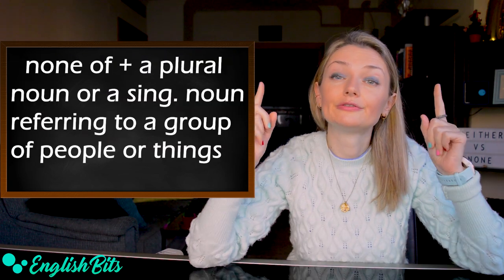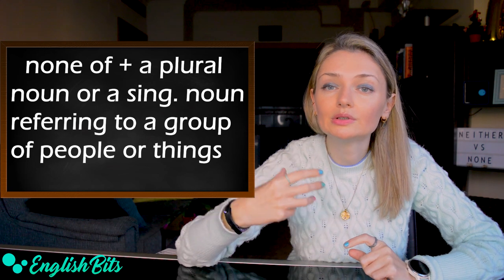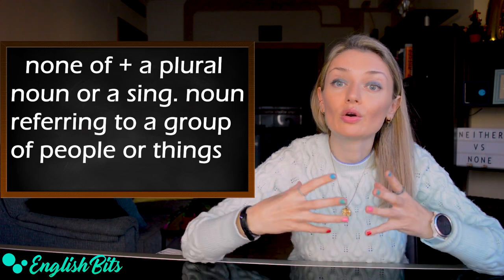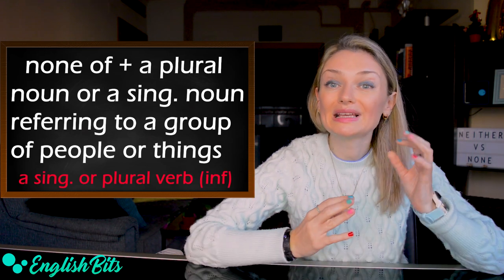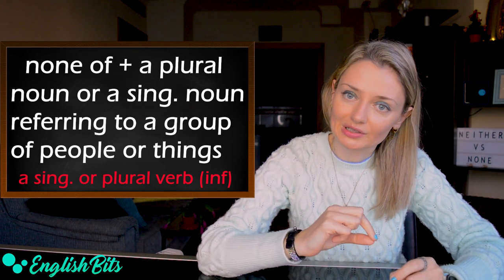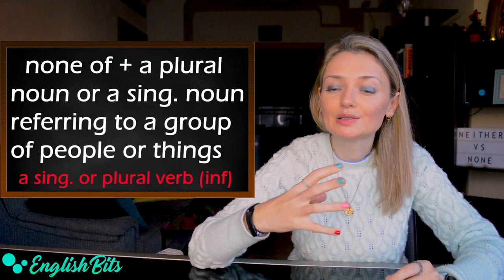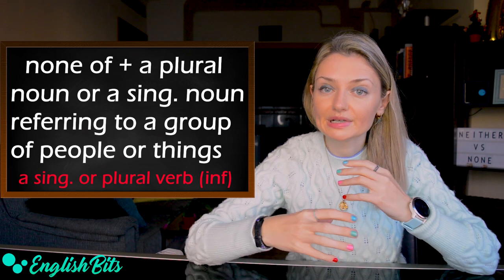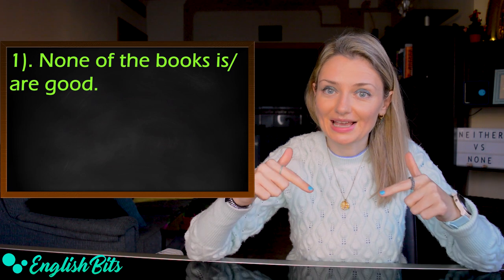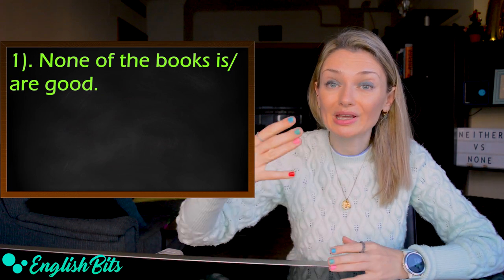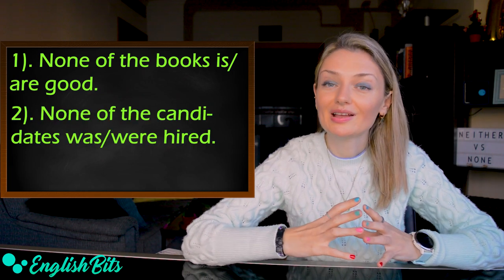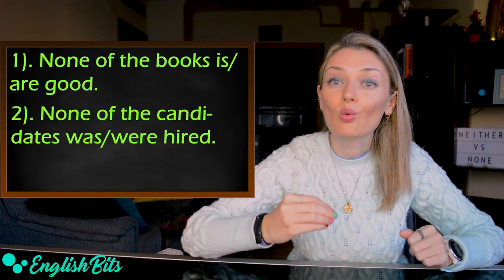And if none of is followed by a plural noun or a singular noun referring to a group of people or things, in this case, we can use either a singular verb or a plural verb after it. Once again, a plural verb is more used in spoken English. For example, none of the books is or are good. So in this case, remember, we talk about three or more books, not two. And one more example here: none of the candidates was or were hired.